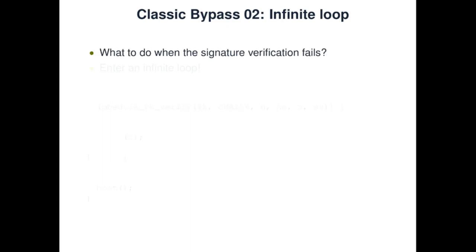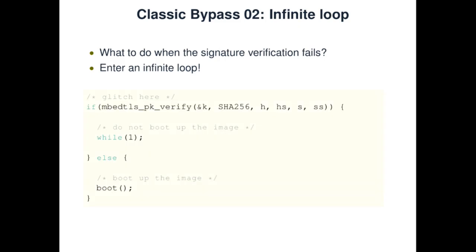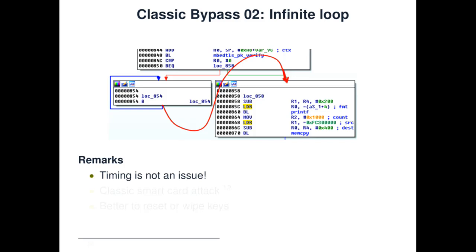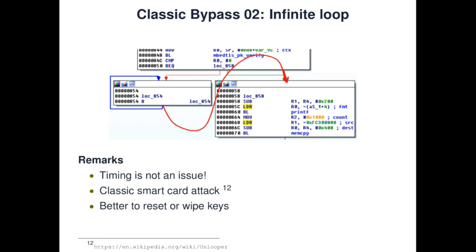What happens when signature verification fails? A classic answer was to just enter an infinite loop. Looking at the disassembly, we have our mbedTLS_pk_verify function — if it succeeds we continue booting, otherwise we enter an infinite loop. For an attacker this is very nice, because if you manage to inject a fault into any iteration of this infinite loop, you'll fall through and continue booting. Timing is not an issue — we've actually removed one of the parameters we need to search. This is a classic smart card attack, and it's probably better to reset or wipe keys in such a situation.